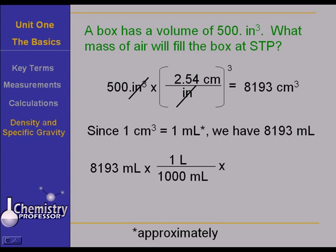But I don't need to stop and do that math. Instead, plug in the next unit times 1.292 grams per liter. You did learn that, didn't you? And that tells me then when I cancel these units, liters cancel, that the mass of this material is 10.6 grams. So what mass of air is needed to fill a box of the volume of 500 cubic inches? 10.6 grams.